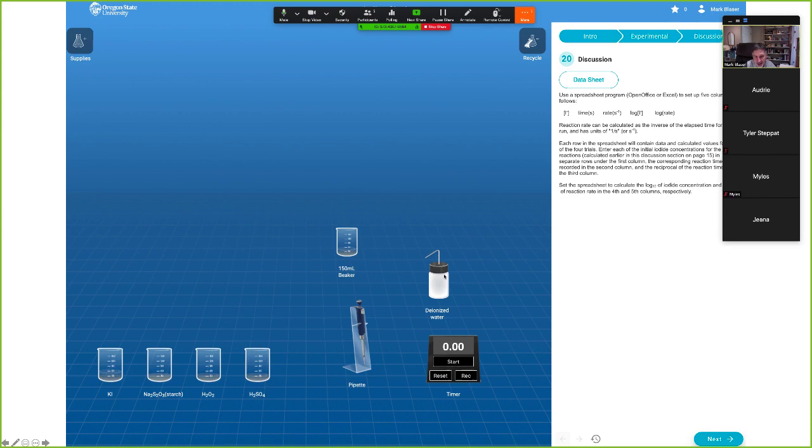Okay, so what's going to happen in the lab? You're going to have some KI solution—that's your source of I minus. Some Na2S2O3 solution mixed with starch—that's your source of S2O3 2 minus and starch. You're going to have some H2O2 solution and some H2SO4 solution, which is the source of the H plus. And then you're also going to have some deionized water.